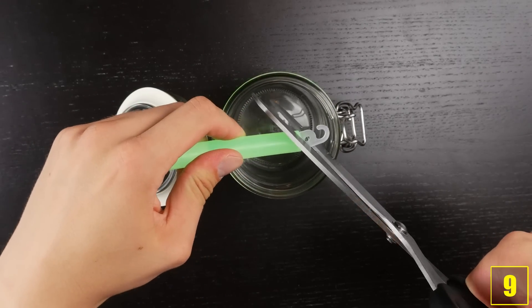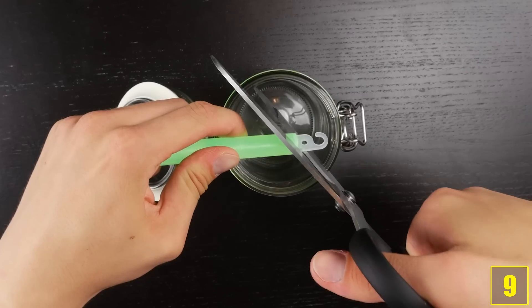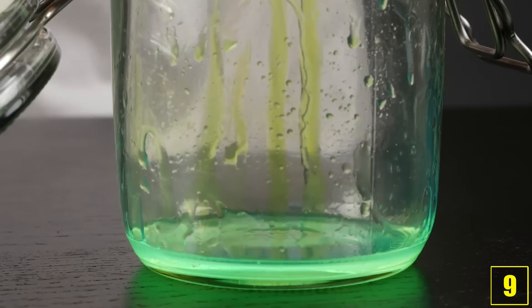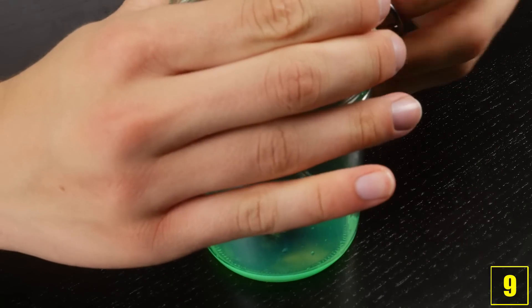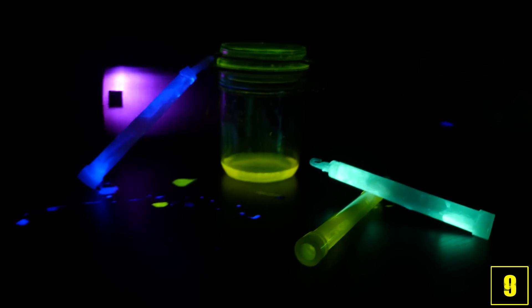Number 9. This first life hack requires you to cut open a glow stick and fill the liquid into a transparent and closable container of your choice. Now close it up, shake it and you've just made the coolest glowing lamp of all time.